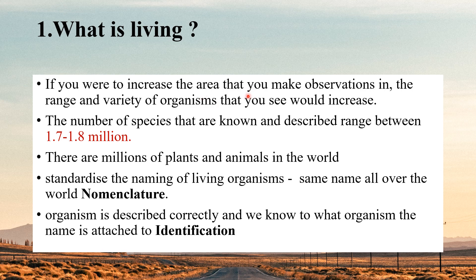So we are going to differentiate about that, and after that we'll try to understand why we need classification, nomenclature, and identification. But in NEET, what they will ask is this: the number of species that are known and described ranges between 1.7 to 1.8 million. This is a very important data point — just make a note of it.